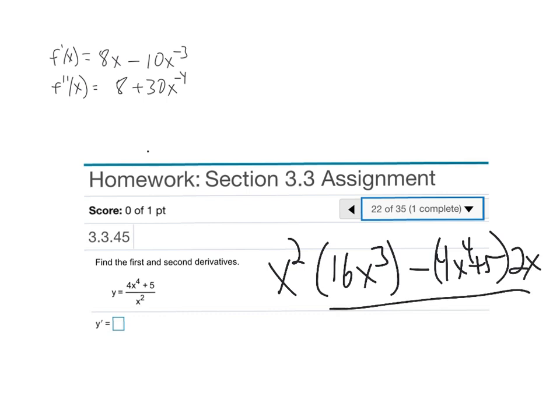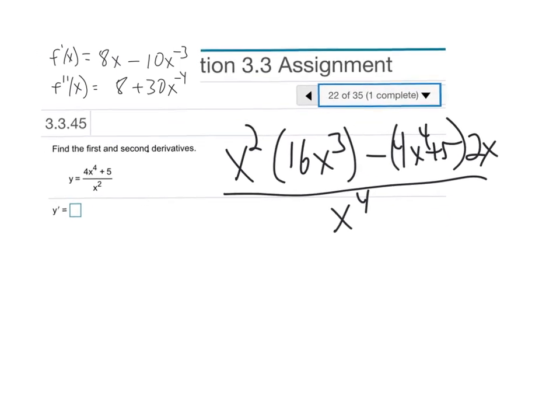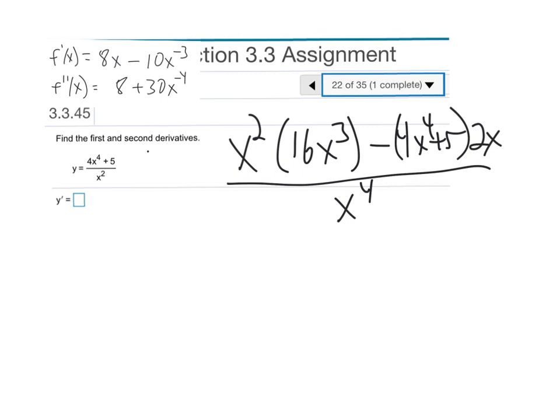All over the bottom squared, which is x^4. That works, but we certainly have to clean that up a little bit. That's going to become 16x^5 - that's 16x^3 times x^2.